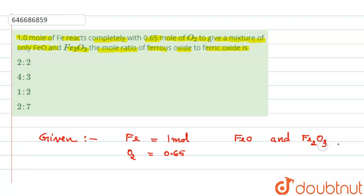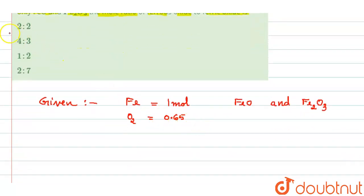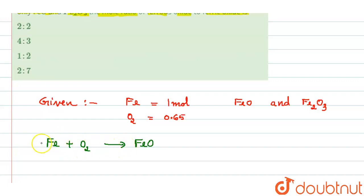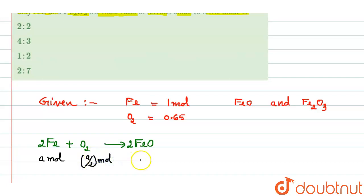Let us write the equation. First, Fe reacts with oxygen to give FeO — this is ferrous oxide because the oxidation state of Fe here is +2. When we balance the equation, we take 2 moles of Fe and 1 mole of O₂. Taking 2 moles of Fe as 'a' moles, O₂ will be a/2 moles, and FeO is also produced as 'a' moles.